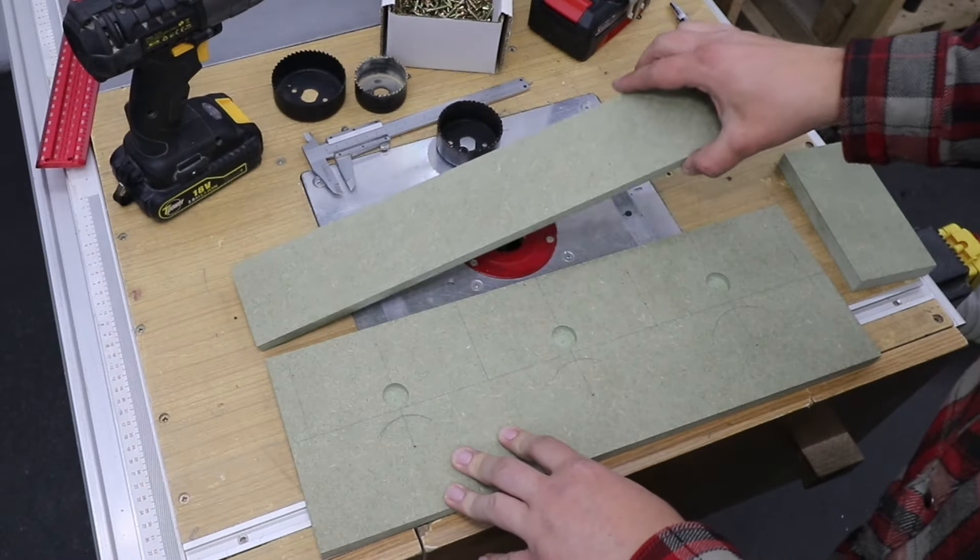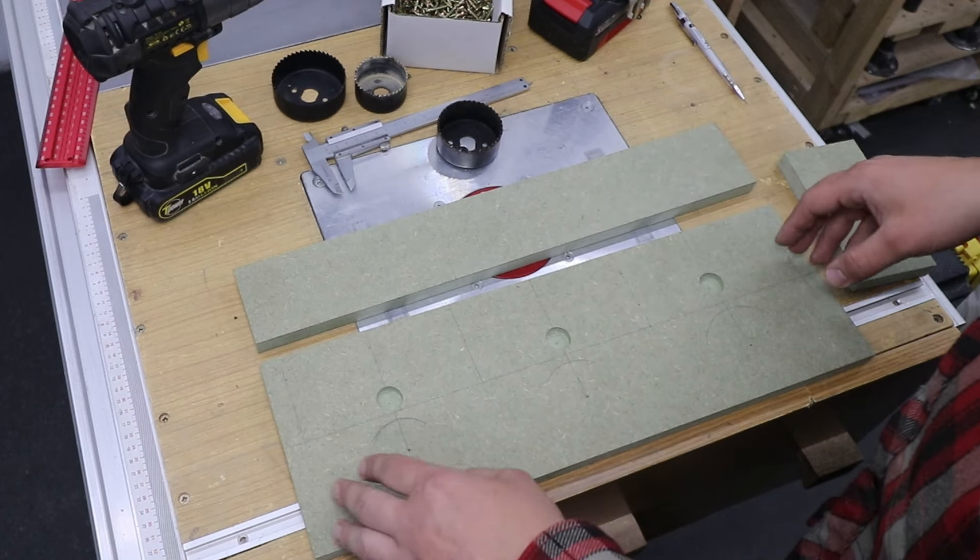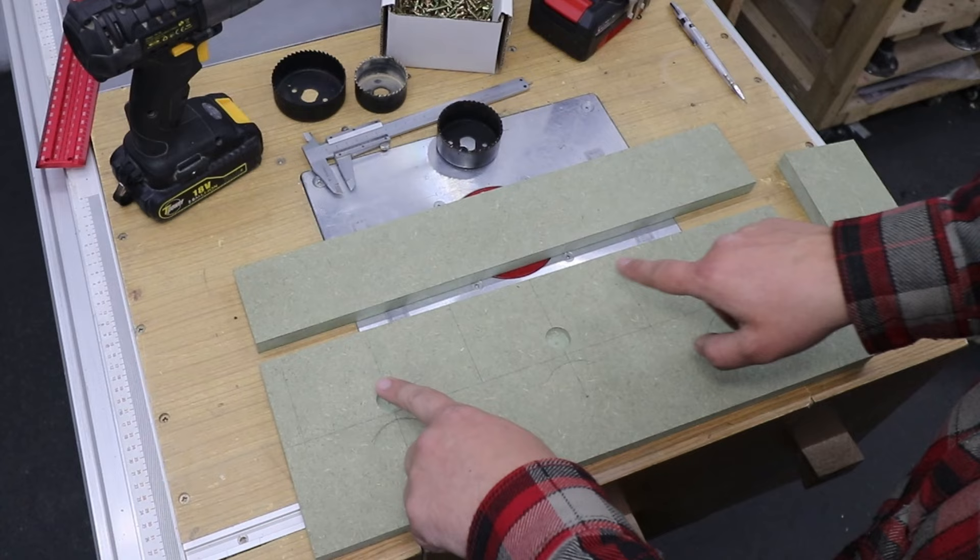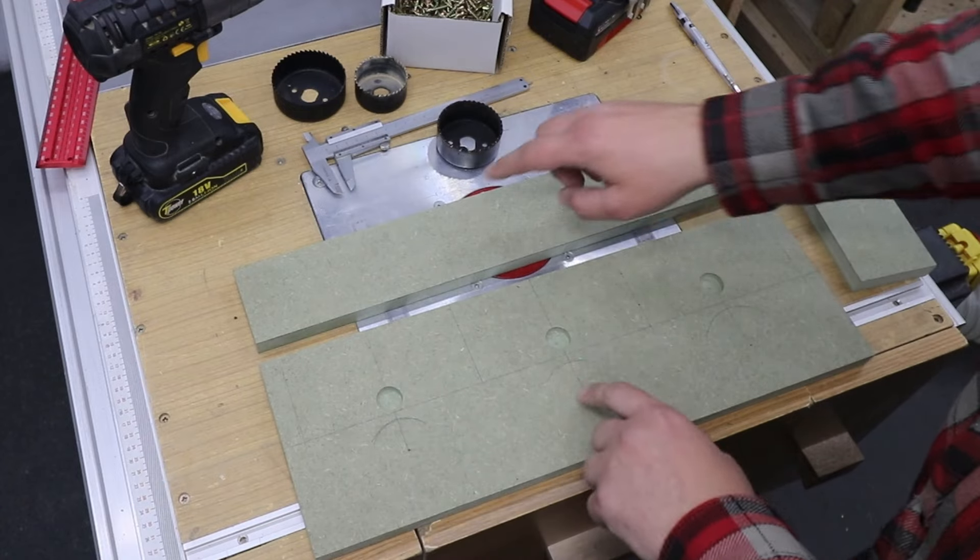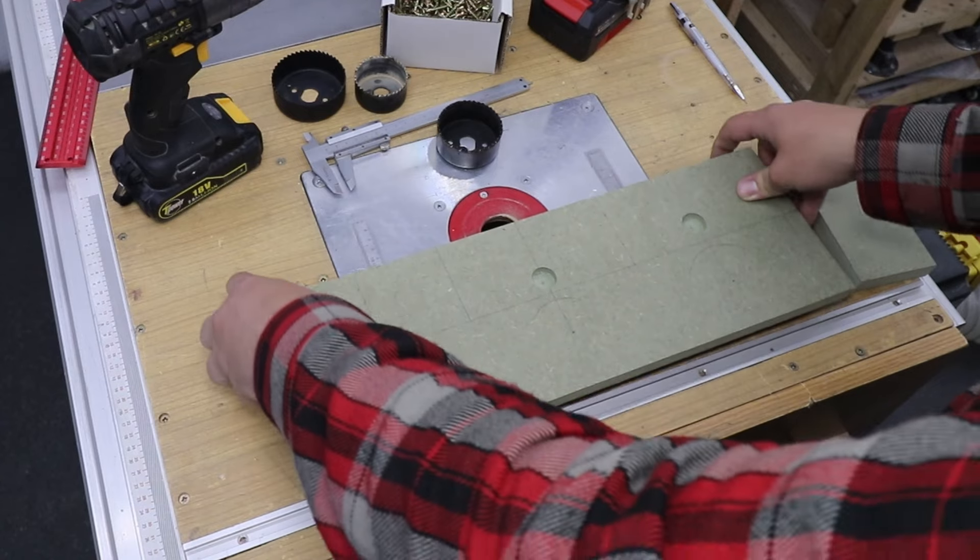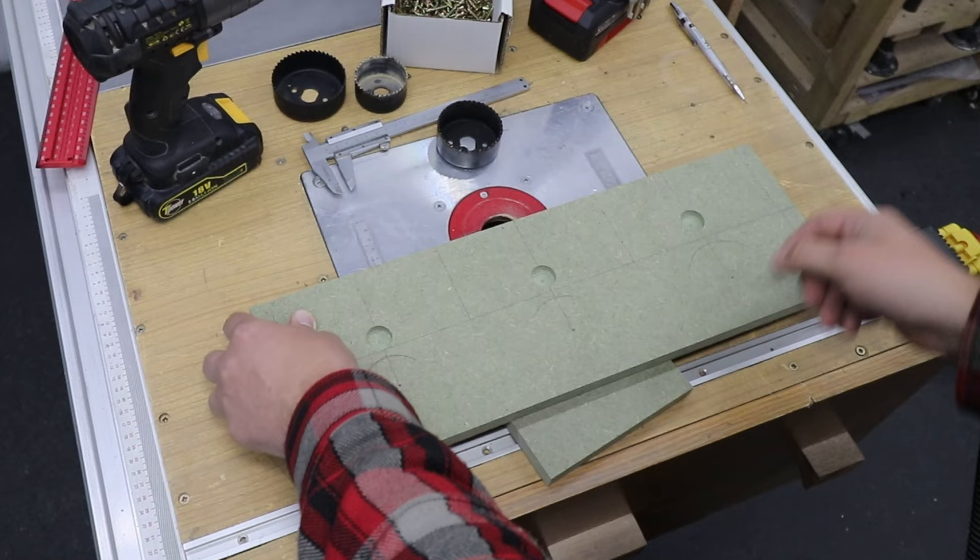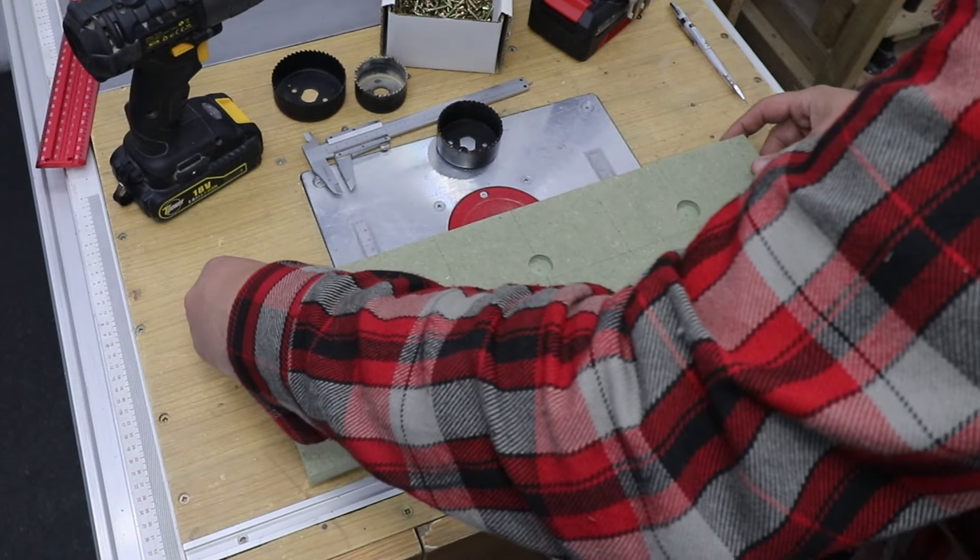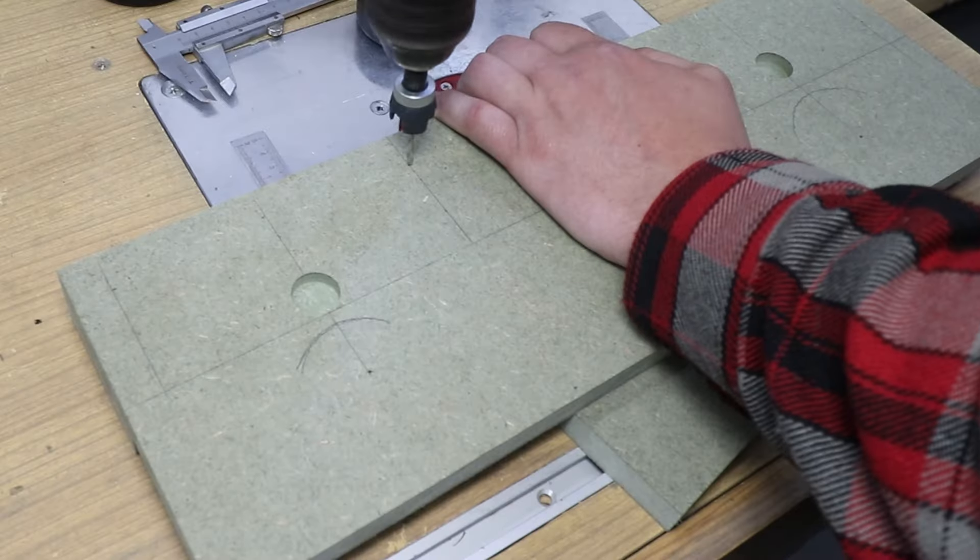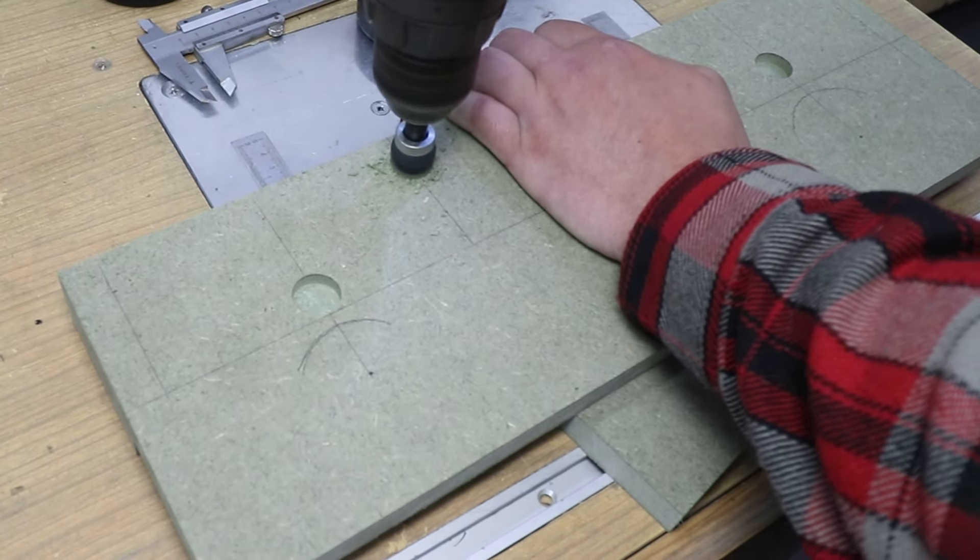For the next step I need to connect both of the pieces together and I'm just going to be using screws for that. This is our bottom and that needs to go underneath just like so. With a scrap piece I'm just going to put that underneath there just to have everything nice and level. I'm going to pre-drill some holes, counter-sink it and drive in some screws.